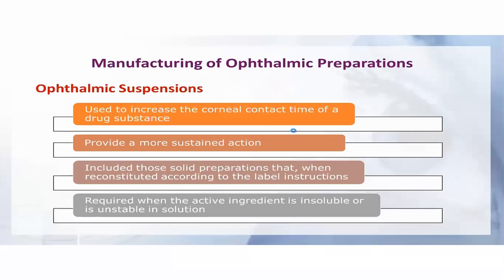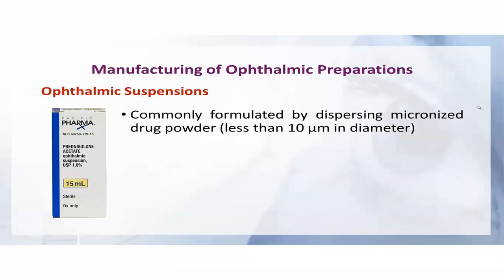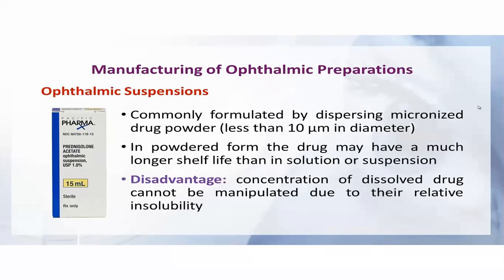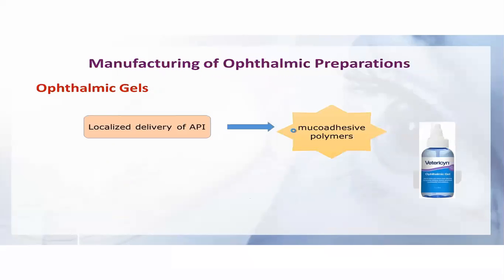The next type of dosage form is suspension, which has different advantages covered in yesterday's talk. As far as particle size is concerned, it should be 10 micrometers or less — that is the requirement for ophthalmic suspensions. However, they have the disadvantage that the dissolved drug cannot be manipulated due to relative insolubility.